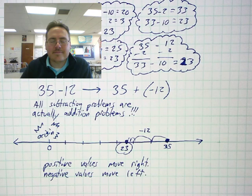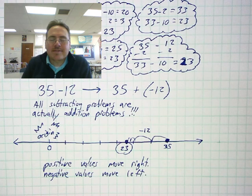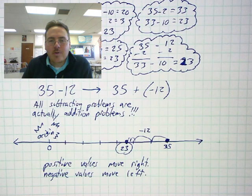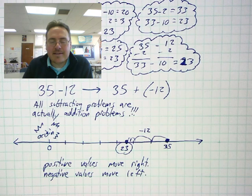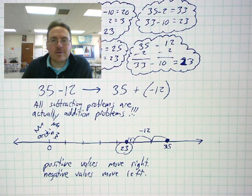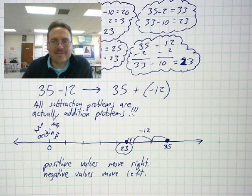So we would still end up at 23. So no matter how you imagine subtracting 12 from 35, whether you split it up into 10s and 1s, or you use compatibility rules and make it into 33 minus 10, or if you reach outside and you start using integers, by adding a negative number, you will still come up with the same answer.